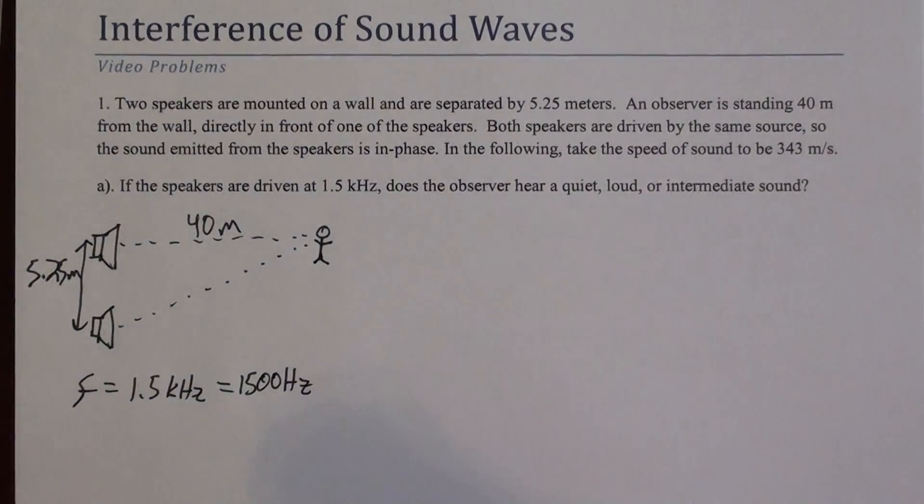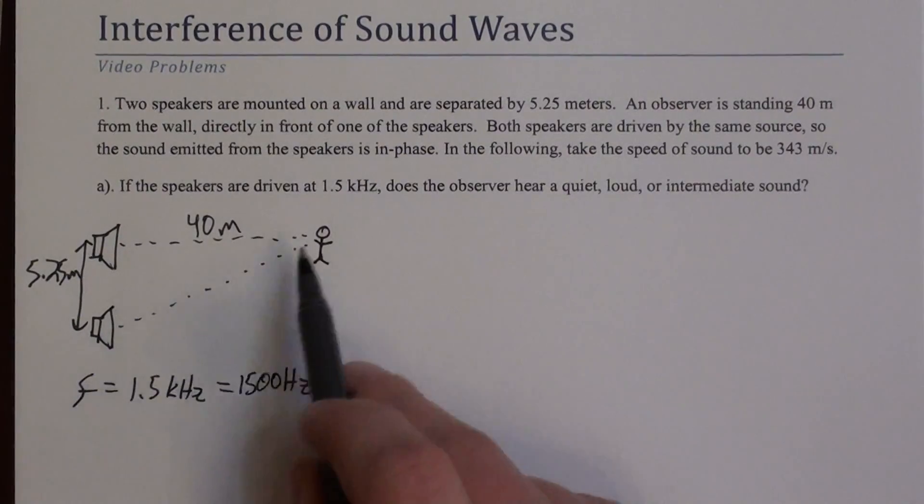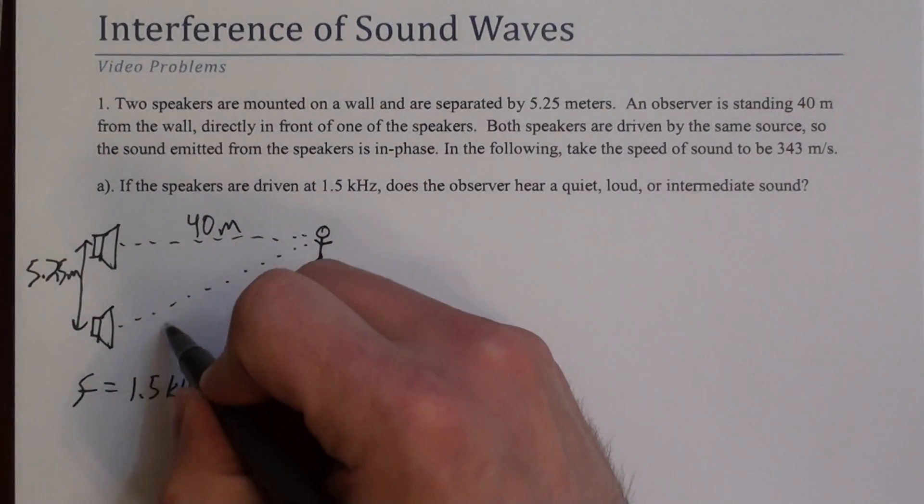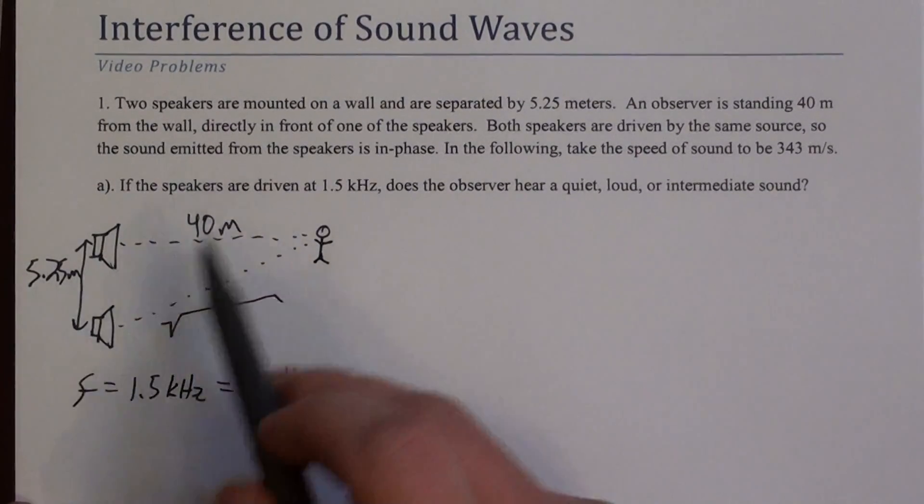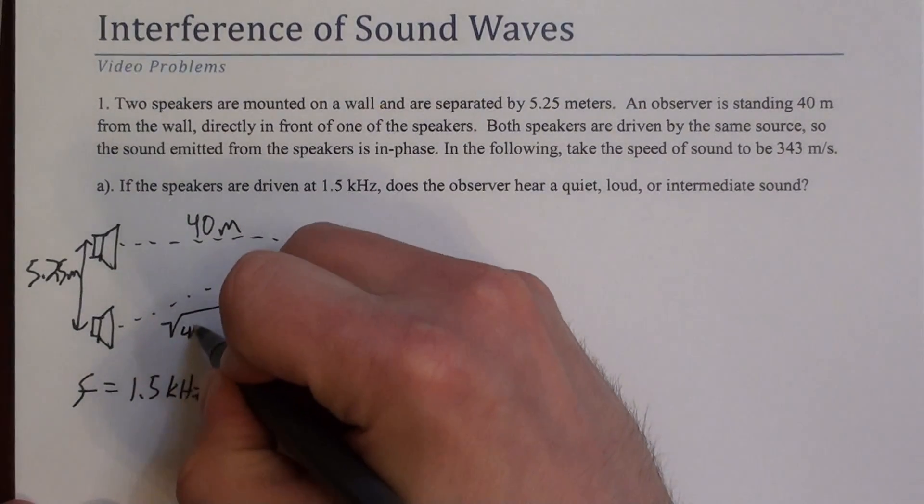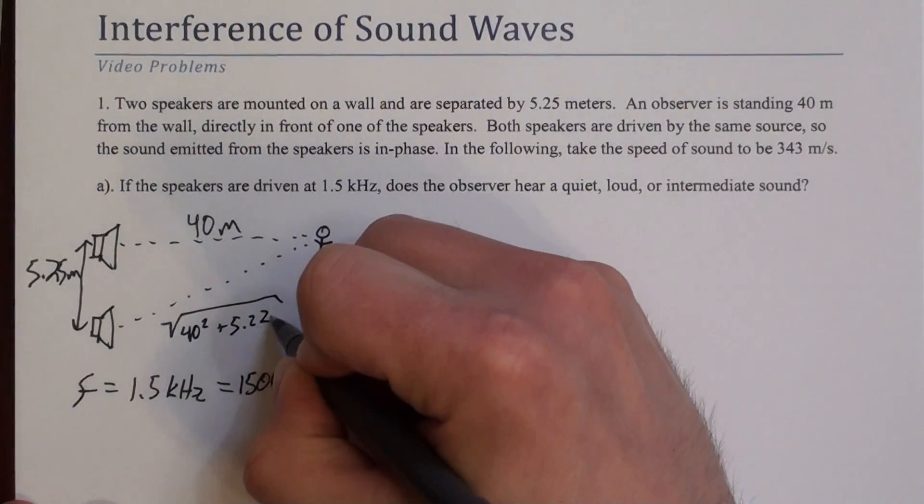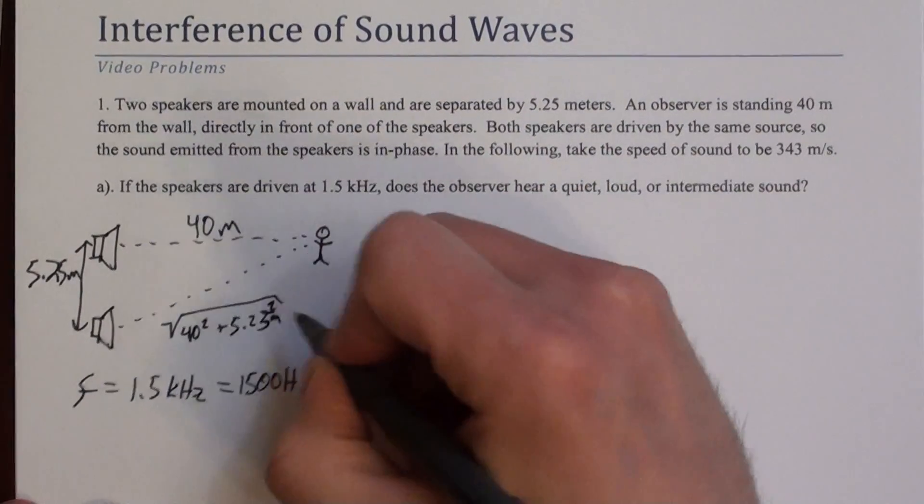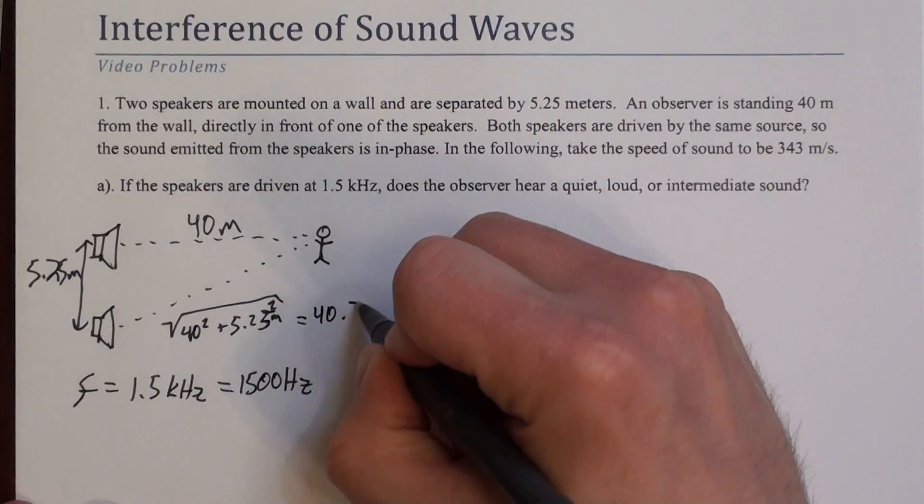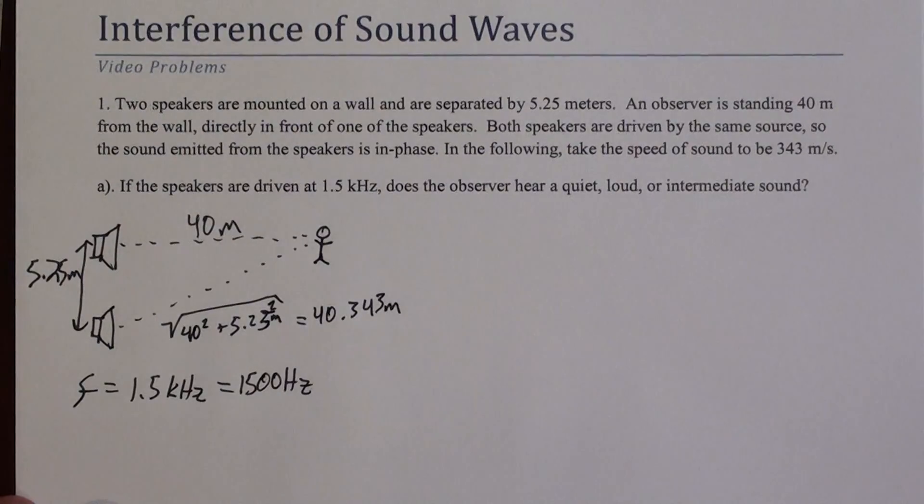So to find the path length difference, I need to know this path length. And I already know this path length. So this is just the hypotenuse of a right triangle. So I can just take the square root of the sum of the squares of these sides. That's just the Pythagorean theorem. So 40 squared plus 5.25 squared. And if you do that, you end up with 40.343 meters.